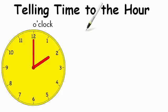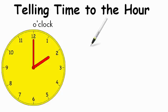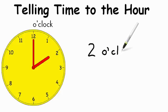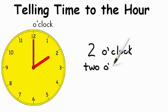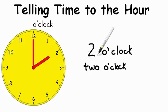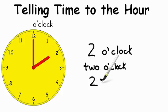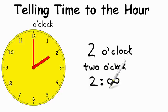Now let's look at some ways that we can write out the time to the hour. We know that the hour hand is pointing to the two and it's at o'clock, or two o'clock. We can write it like this: we can write "2" and then "o'clock." Another way is to write out the word "two" followed by "o'clock." We can also write it in word form as "two o'clock." And finally, we can write it digitally as two, with a full colon, zero zero — where those zeros stand for the minutes. Two o'clock.